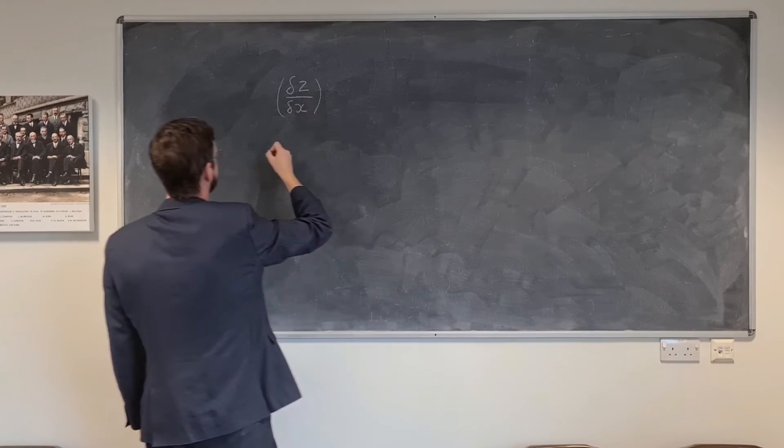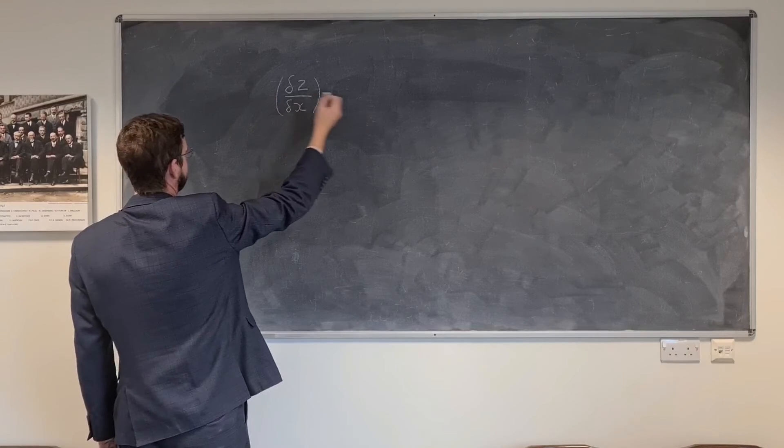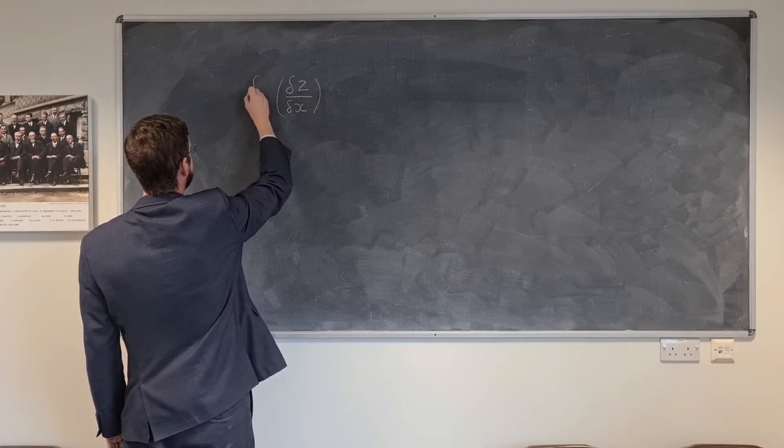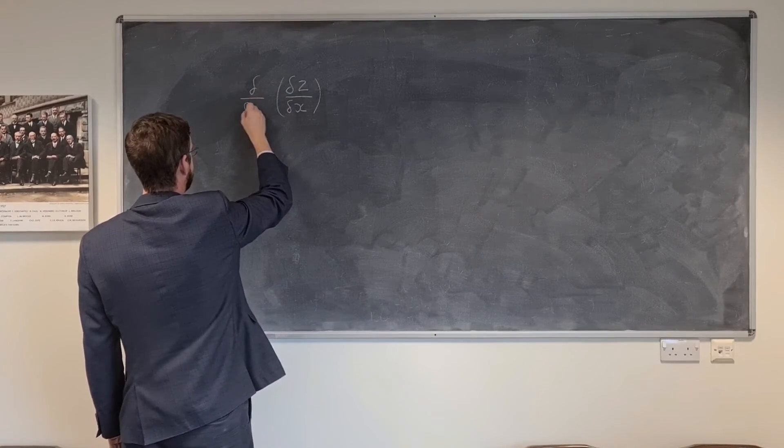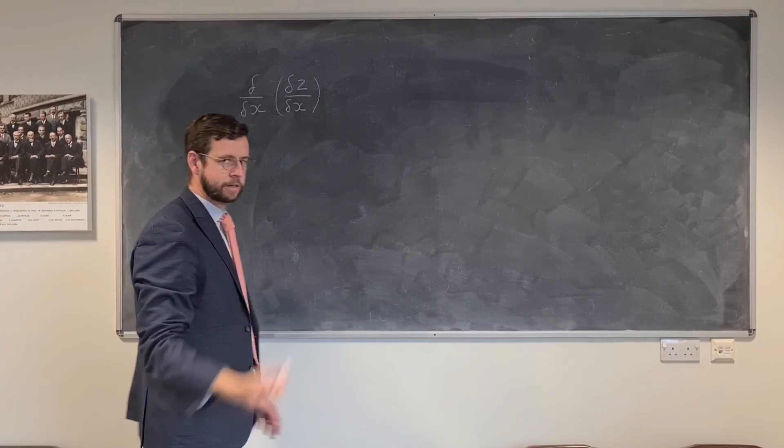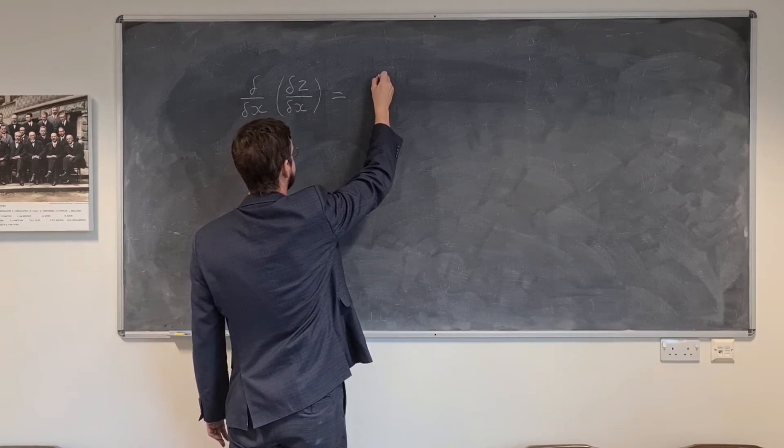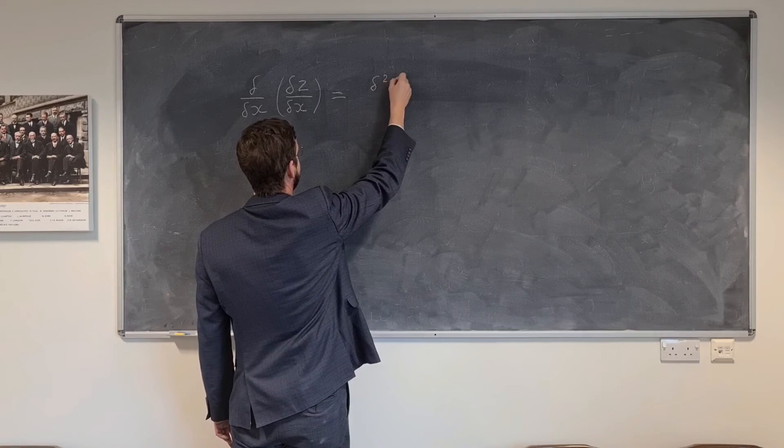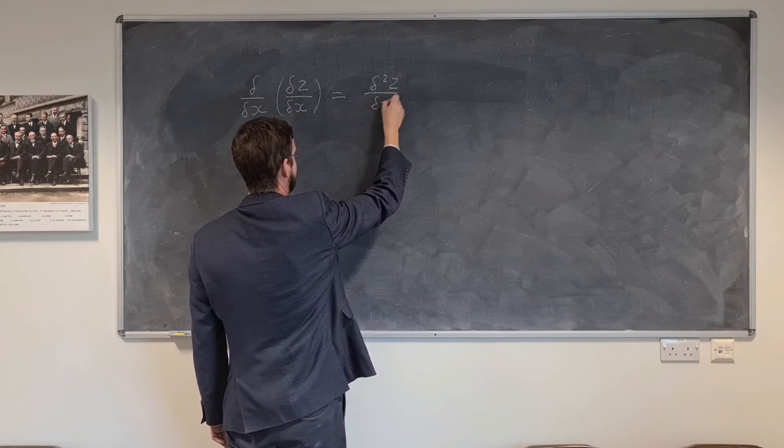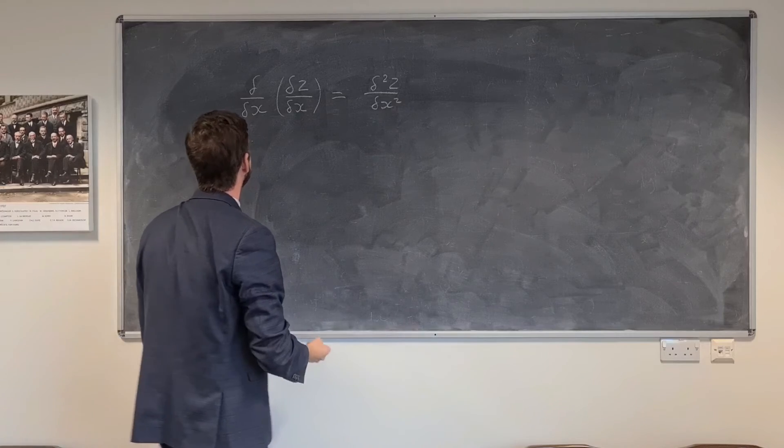and we differentiate it with respect to x, then of course that would just be dz by dx. But then if we further differentiate it with respect to x, so we're now finding the second order derivative,